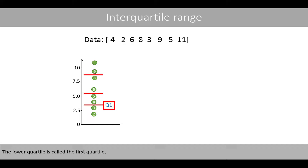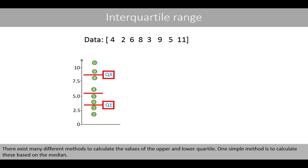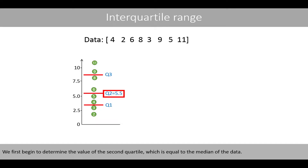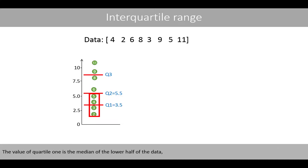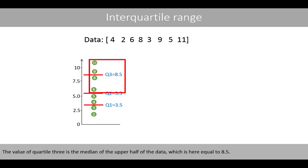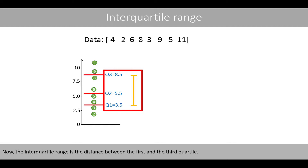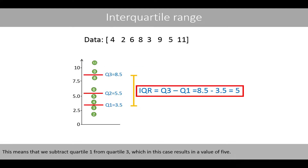The lower quartile is called the first quartile, whereas the upper quartile is called the third quartile. One simple method is to calculate these based on the median. We first determine the second quartile, which equals the median of the data. Since we have an even number of values, the median is the mean of the two middle values, 6 and 5 — so quartile 2 equals 5.5. Quartile 1 is the median of the lower half, equal to 3.5, since it is the mean of 3 and 4. Quartile 3 is the median of the upper half, equal to 8.5. The interquartile range is quartile 3 minus quartile 1, which results in a value of 5.